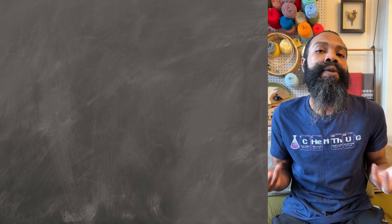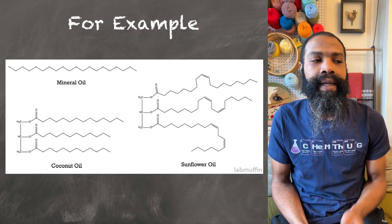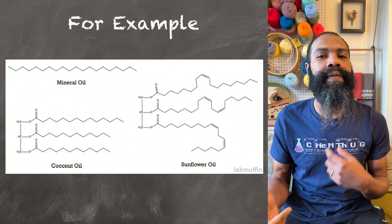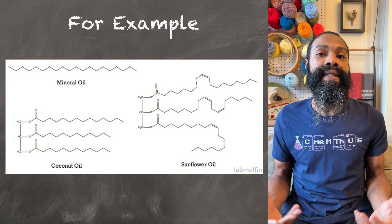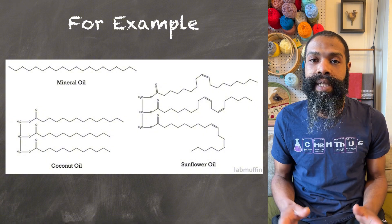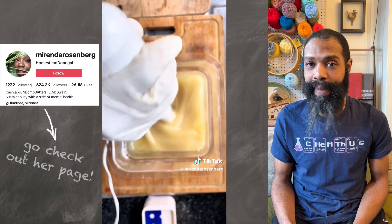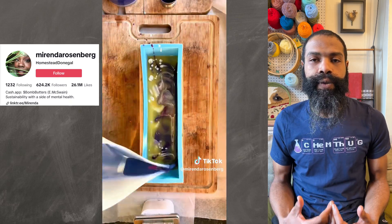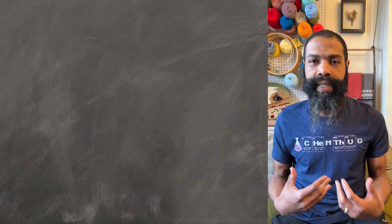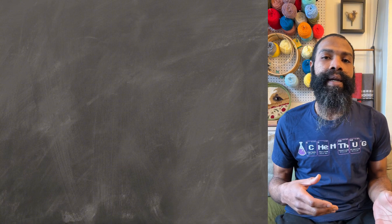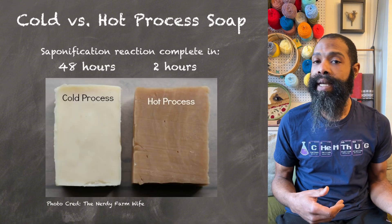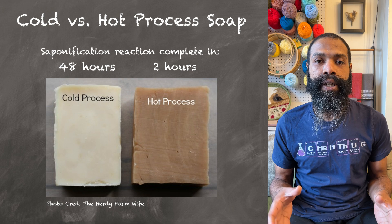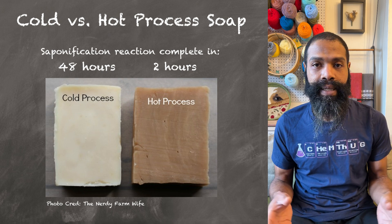But what makes soap soap has a lot to do with the fact that different fats and oils have different triglyceride esters. And this is where the mastery of soap making comes in, and that people like Miranda, who've been making soap for a long time, know which fats and oils to choose to give their final soap what properties they want to give it. And depending upon whether or not you're making cold process soap or hot process soap determines how long it takes for the process to be complete.